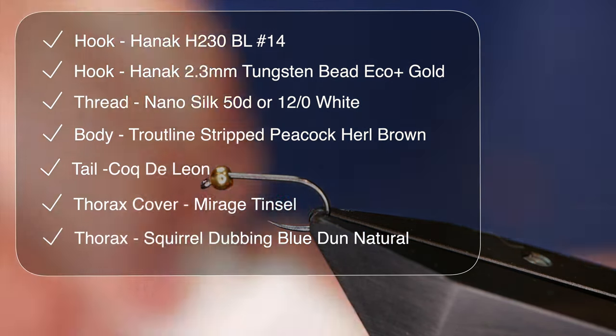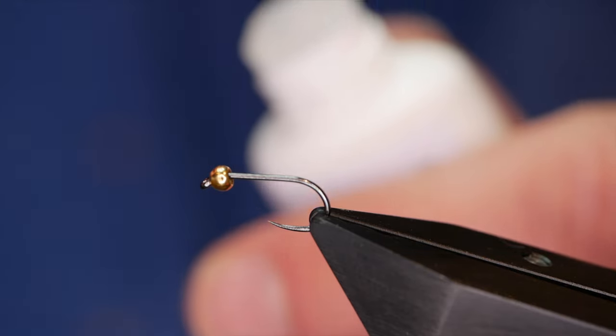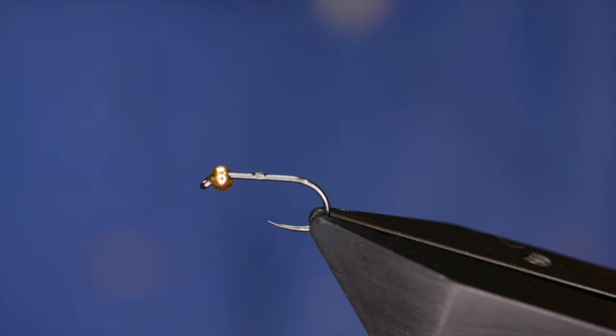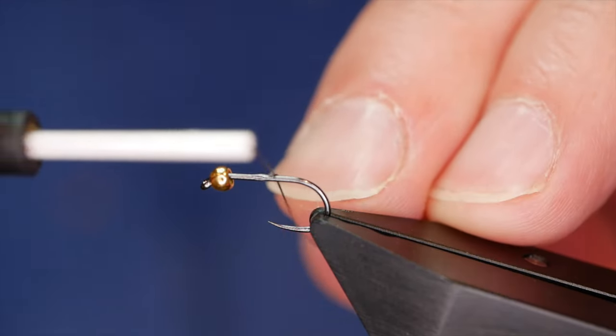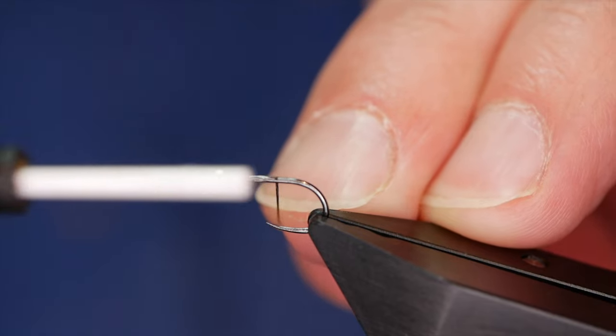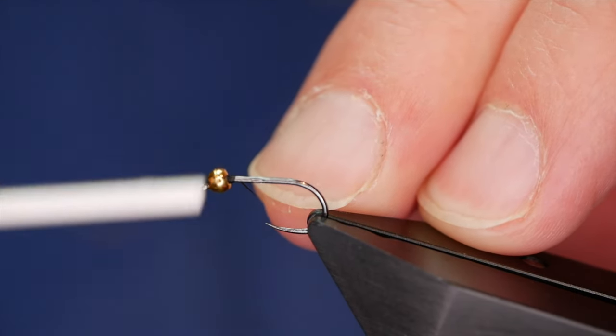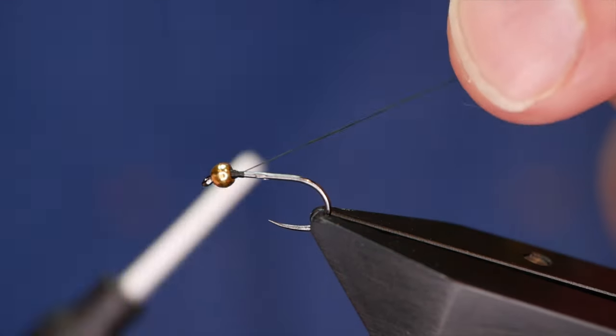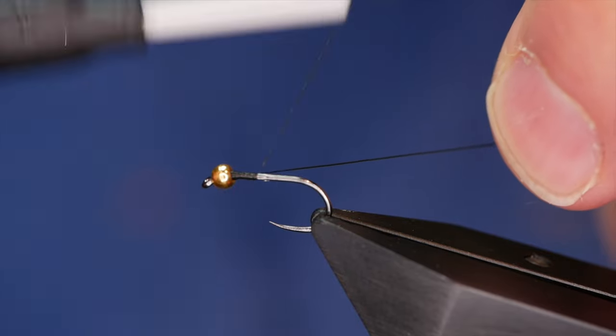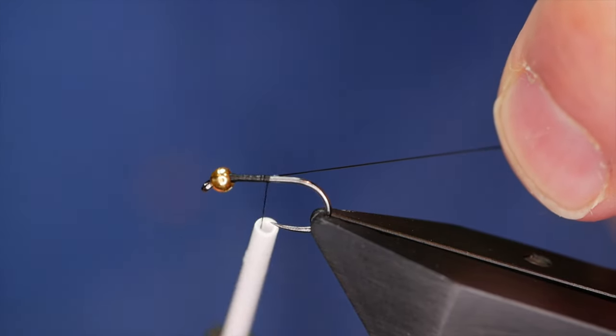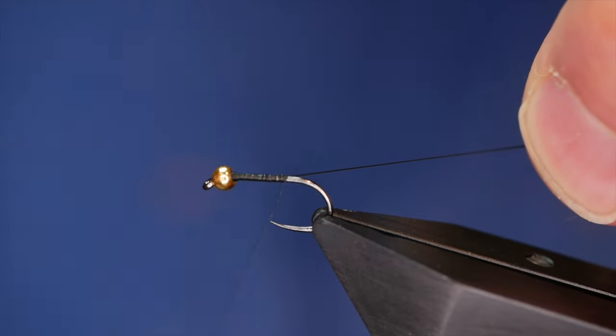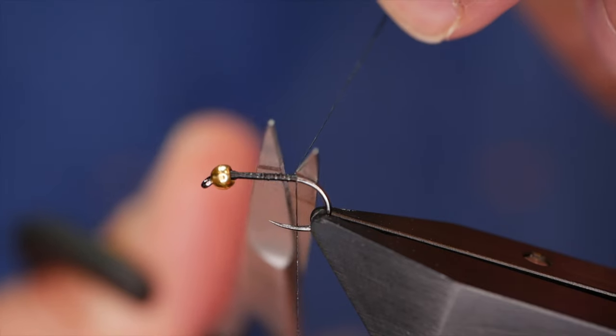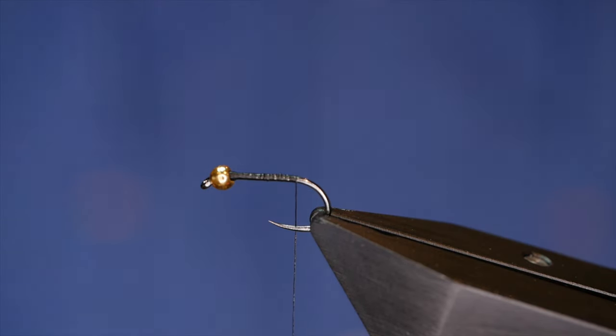The first thing I want to do as I'm using nano silk is put a tiny dot of super glue onto the shank and use my silk to work that up and down the shank. I'm going to come in behind the bead with several turns, then use the rat's tail to bring my thread down the shank all the way to where a barb would be on a barbed hook.